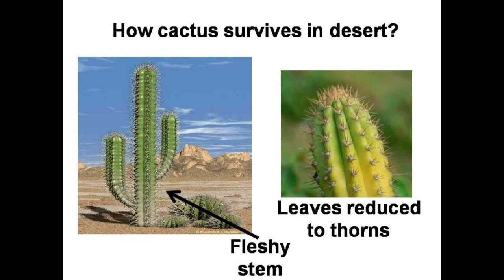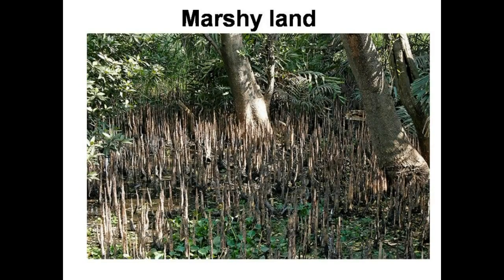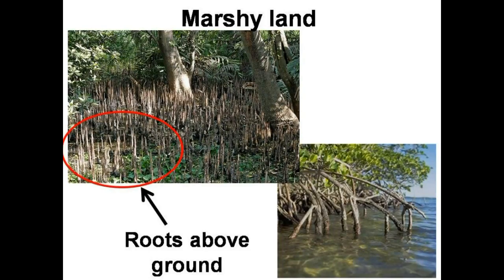Their roots spread far out in search of water. You must have heard about mangrove forests like Sundarbans. If you ever go there, you would find this kind of tree. The small branch-like things coming out of the soil are actually roots. In marshland, the soil is clay, so there is too much water in the soil but very little air. Those small roots come out of the soil to breathe in air.